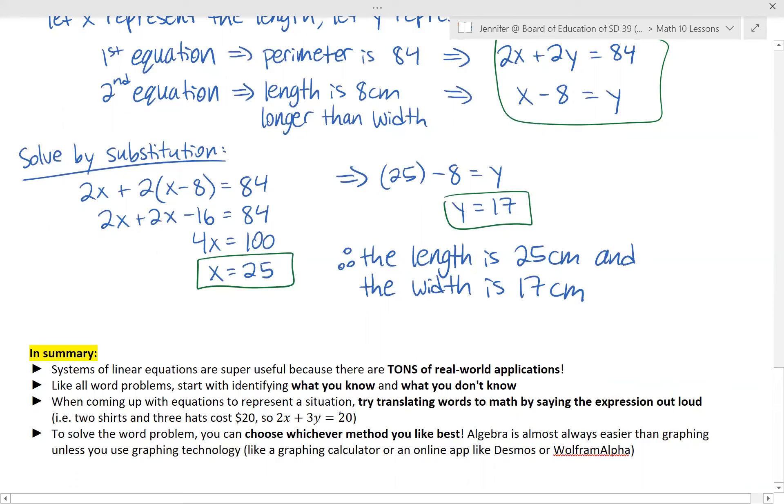When you're coming up with equations to represent the situation, try translating the words to math by saying the expression out loud. So for example, the words given to us might be two shirts and three hats cost $20. So how do you translate that to math? You can try it out with this equation and say it out loud. Well, two times the cost of the shirt plus three times the cost of the hat equals $20. Have I set this up correctly? I think so.